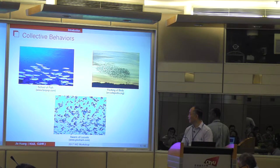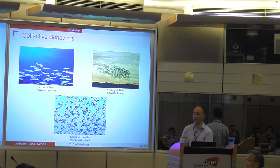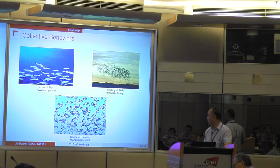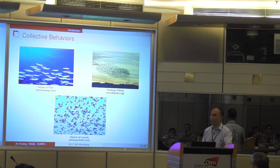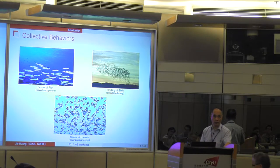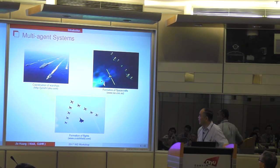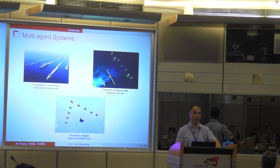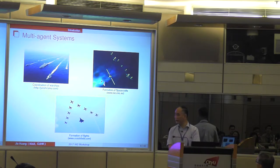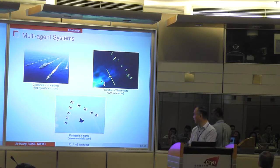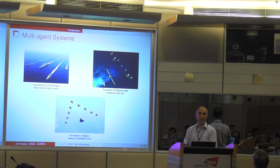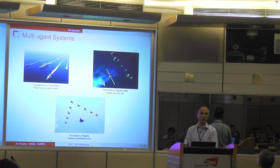It has been observed that many living beings tend to perform collective behaviors. Some examples include schools of fish, flocking of birds, and swarms of locusts. It is also known that the collective behaviors of living beings require communication among the agents. These collective behaviors have motivated many engineering applications, such as coordination of warships, formation of spacecrafts, and formation of flights, which in turn have given birth to the topic of control of multi-agent systems.